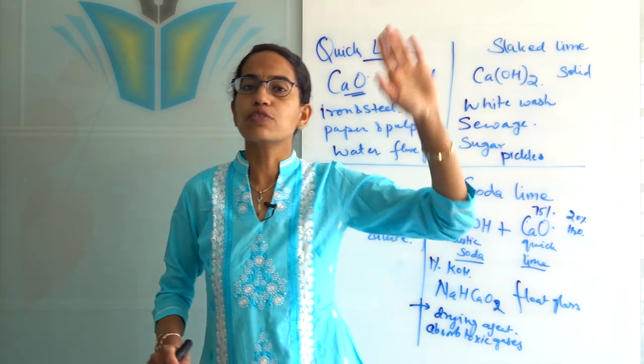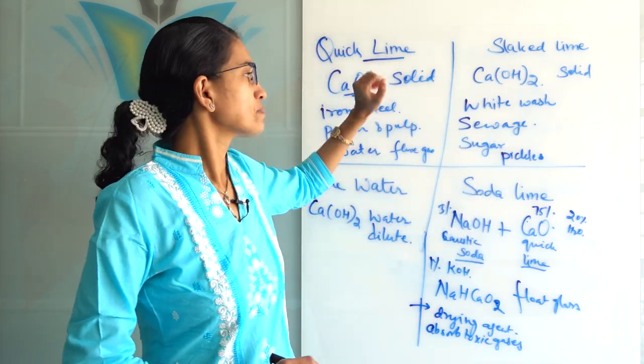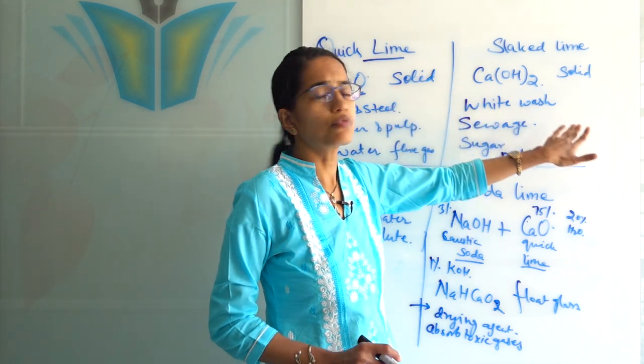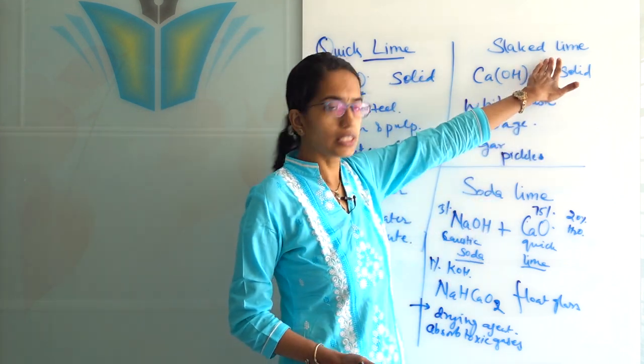Where is it used? In whitewashing the house. So in houses where there is no plaster, whitewashing is done regularly and that is by using slaked lime.